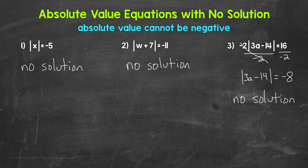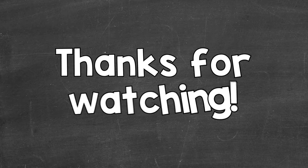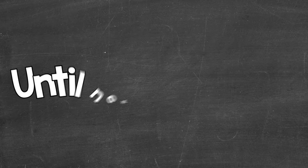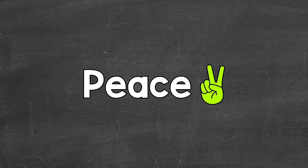So there you have it — examples of absolute value equations with two solutions, one solution, and no solution. I hope that helped. Thanks so much for watching. Until next time, peace.